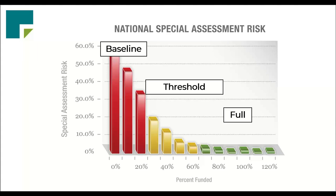The model — the reserve study — is designed to treat the current owners and future owners in the fairest way possible. If you live under your community association's roof for one full year, it's your responsibility to pay for that one year's worth of use of that roof. That is essentially fully funding the reserves at 100% — just paying your fair share along the way.